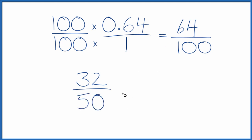And we can reduce this even further. Divide 32 by 2, that's 16. 50 by 2, that's 25. And we can't reduce this fraction any further. So the decimal 0.64 gives us the fraction 16/25. This is in lowest terms.